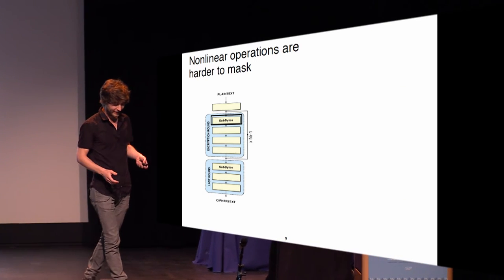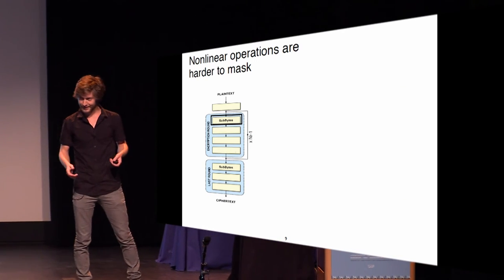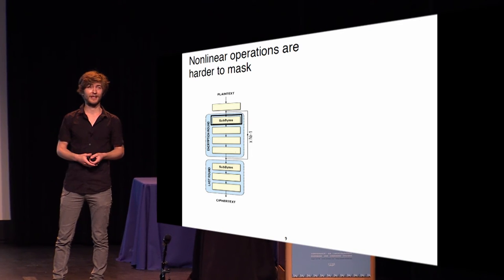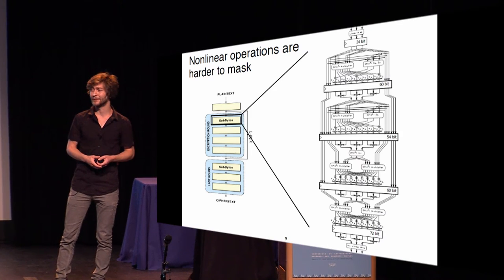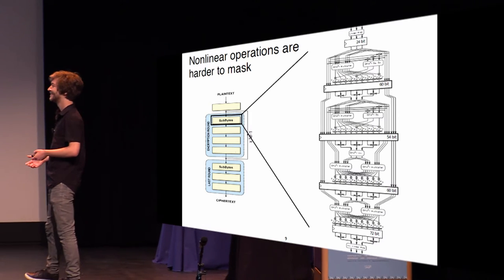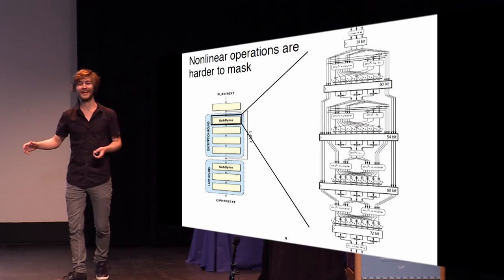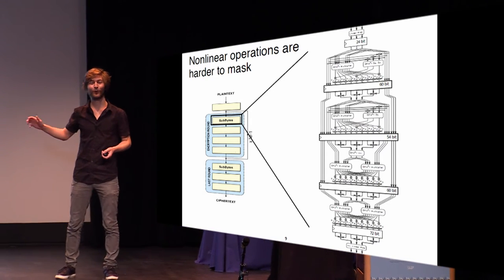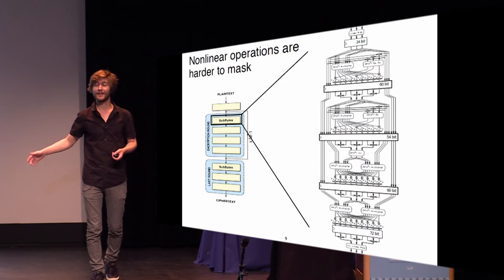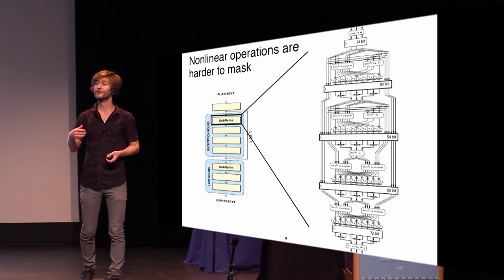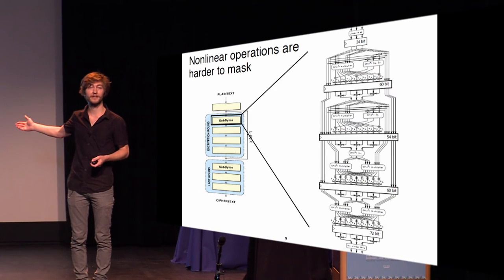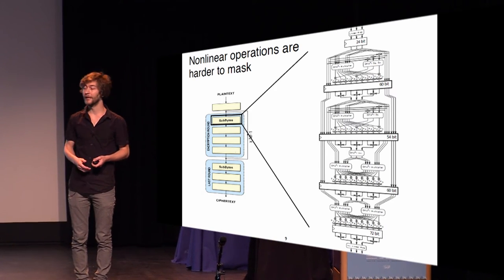Things get a bit messy when we want to mask the nonlinear operations — the S-box or SubBytes operation. This is a diagram of our second-order masked implementation. I will not detail this; instead I will detail the first-order implementation, and I'm sure you will enjoy reading this in our paper.